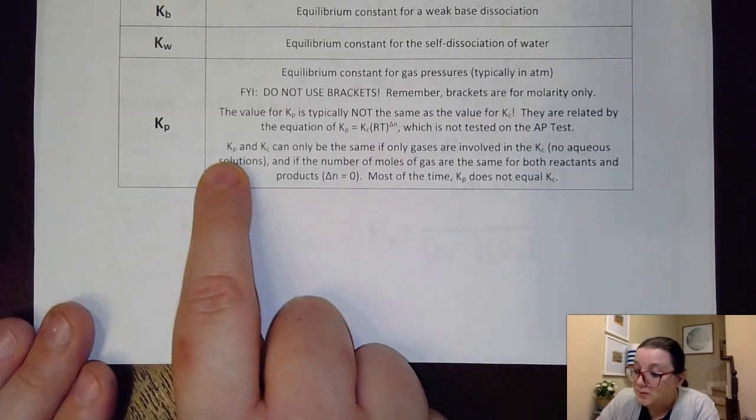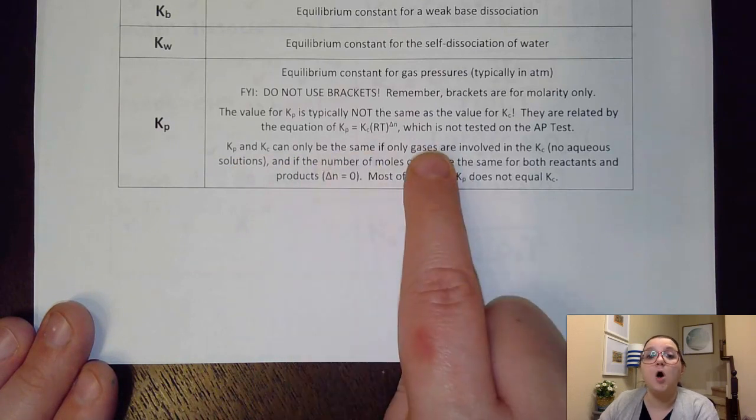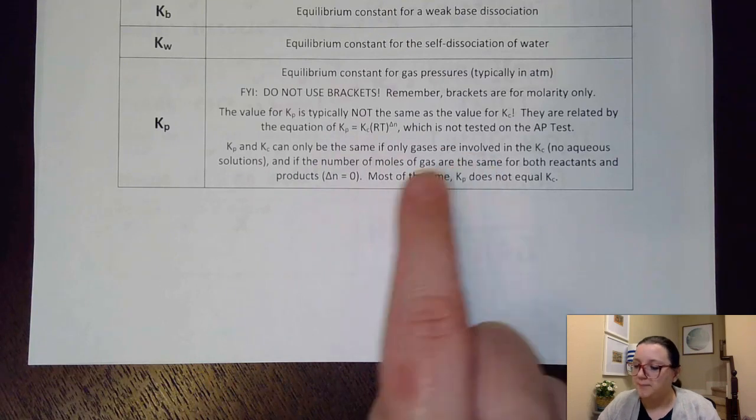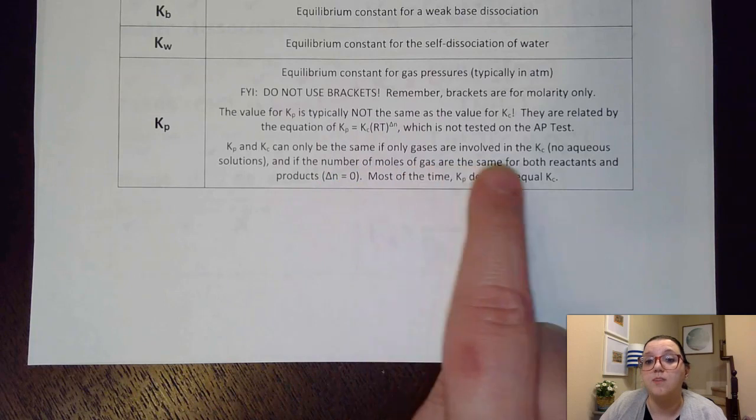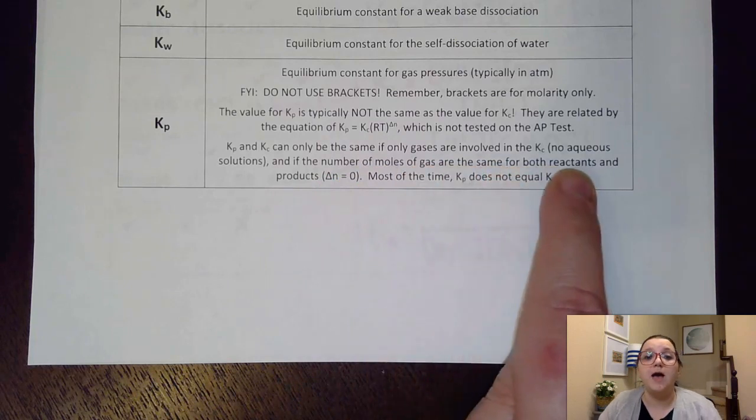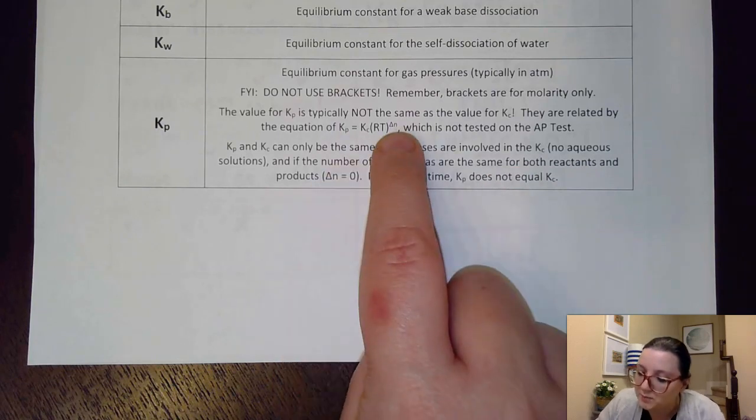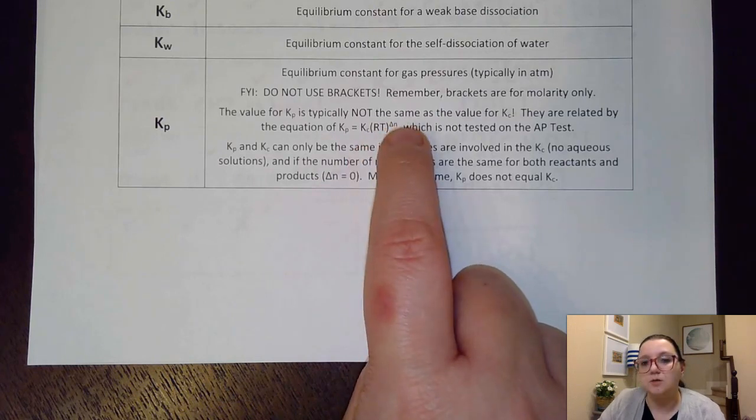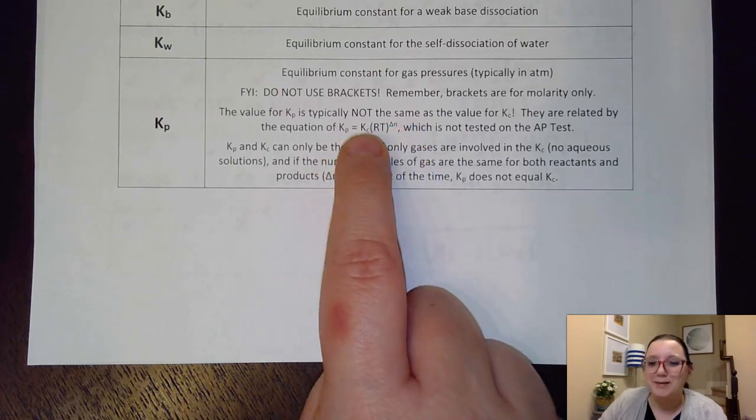Now it says some other information down here. The value for KP is typically not the same as the value for KC. Obviously, while pressure and molarity are related, they're not equal to each other. And they are related by this equation right here. You notice it involves our gas law constant. It involves temperature as well as a change in moles. Now this equation is not tested on the AP test, but I wanted to show it to you just so you can see that the two are related and you could calculate back and forth between them if you needed to.